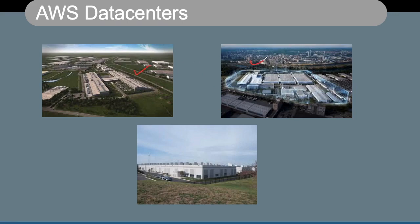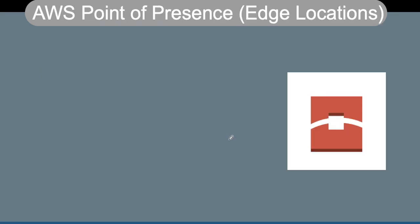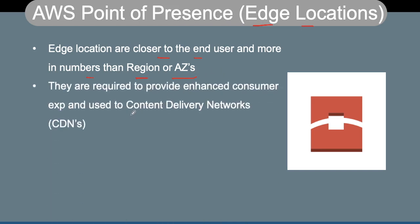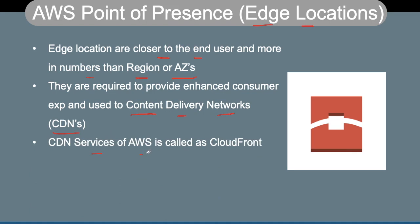AWS points of presence, typically called edge locations, are closer to the end user and greater in number than regions or availability zones. They are required to enhance the consumer experience and are typically used for content delivery networks, or CDNs. The CDN service in AWS is called CloudFront.